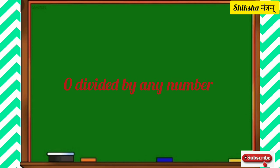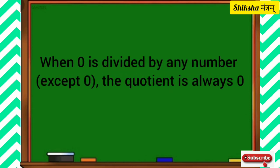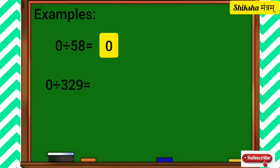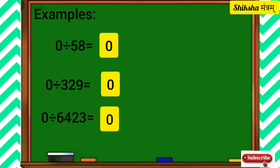Let's take another property: when 0 is divided by any number except 0, the quotient is always 0. For example, 0 divided by 58 is equal to 0, 0 divided by 329 is equal to 0, and 0 divided by 6423 is also 0. In all these cases, when 0 is divided by any number, the quotient is 0.